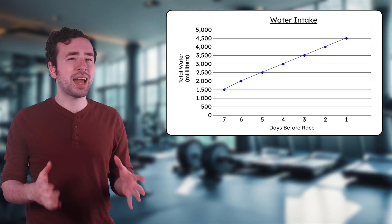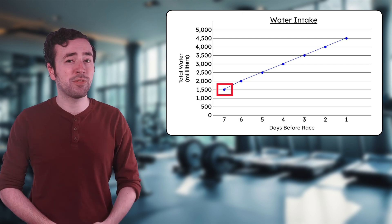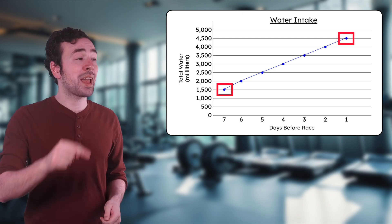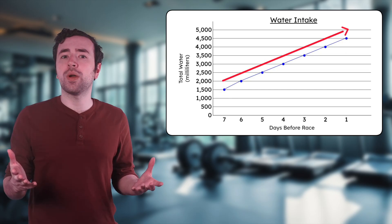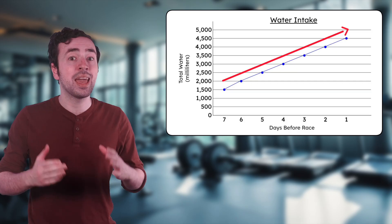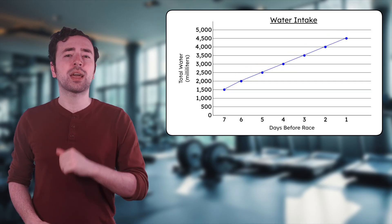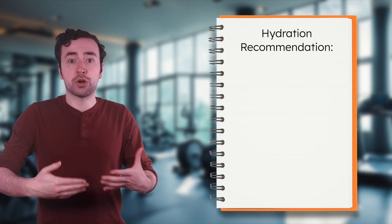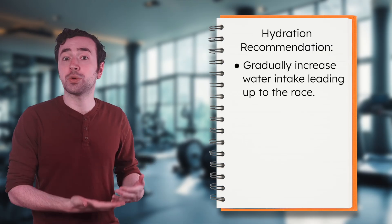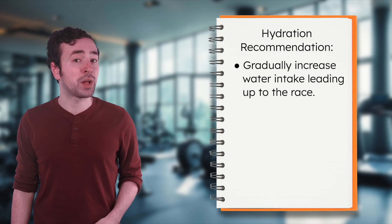You might have noticed that athletes drank the least amount of water seven days before the race, and the most water the day before the race. The line trends steadily upward, showing that most athletes increased their water intake each day as race day got closer. This pattern likely helped them stay hydrated and prepared their bodies for peak performance. That's an important detail for our training guide — encourage athletes to gradually increase their water intake, especially in the final days before the race, so they're well hydrated and ready to compete.